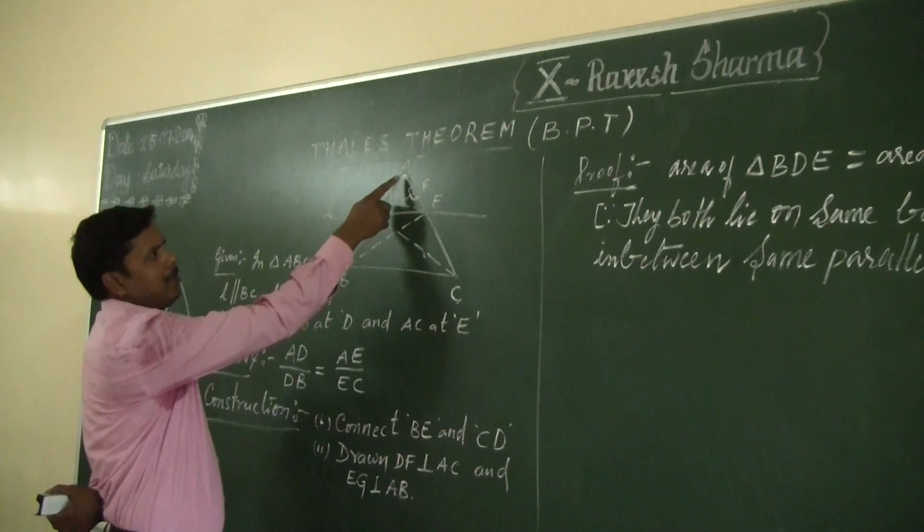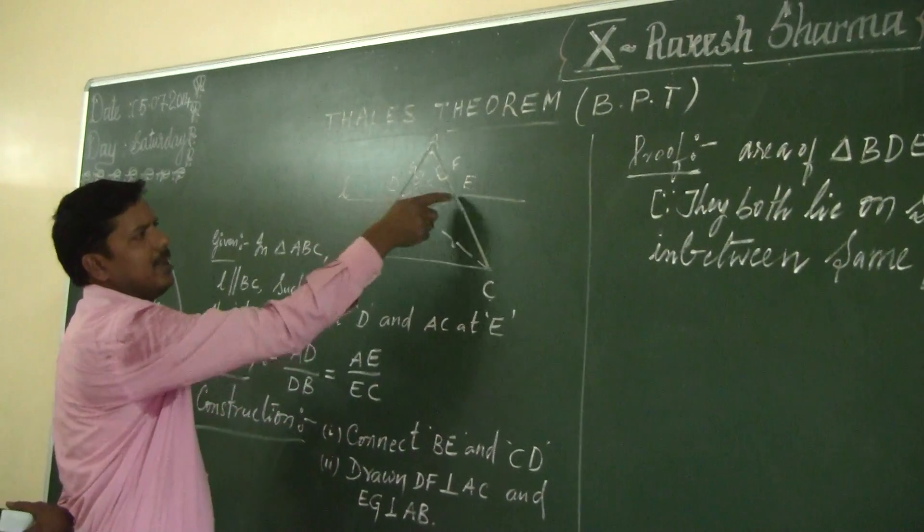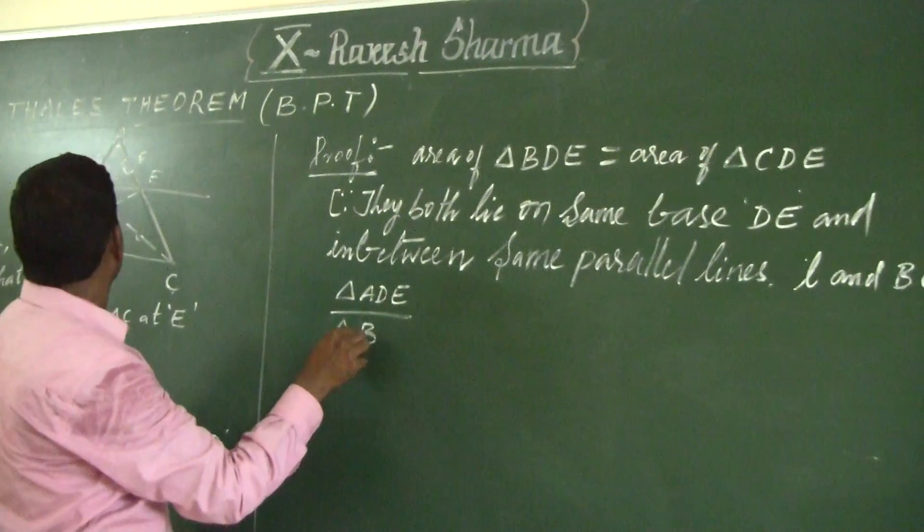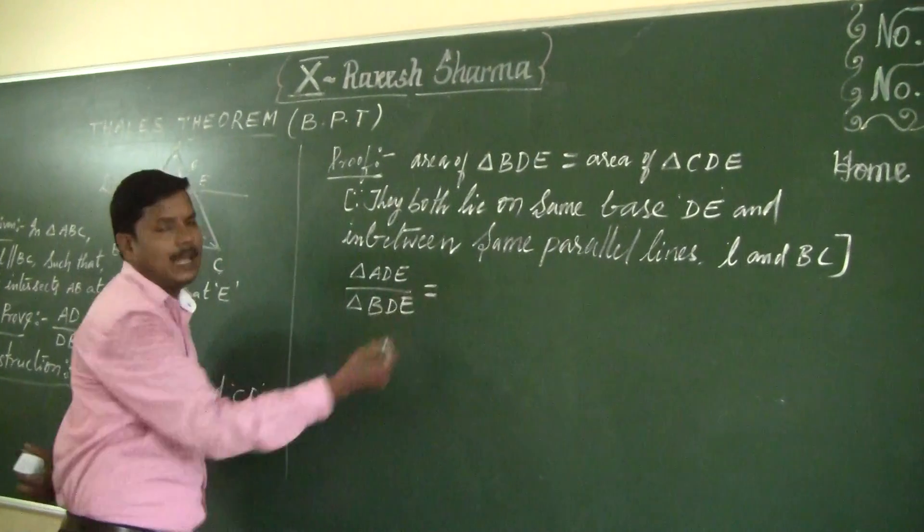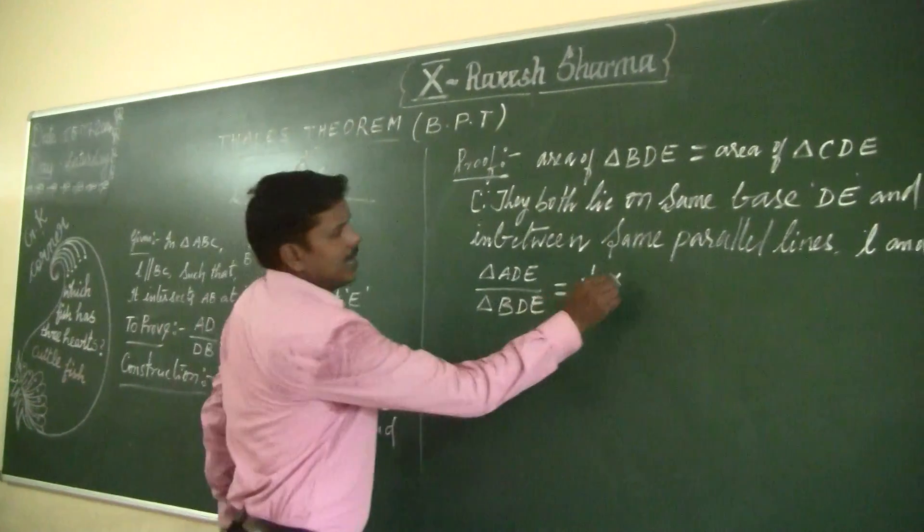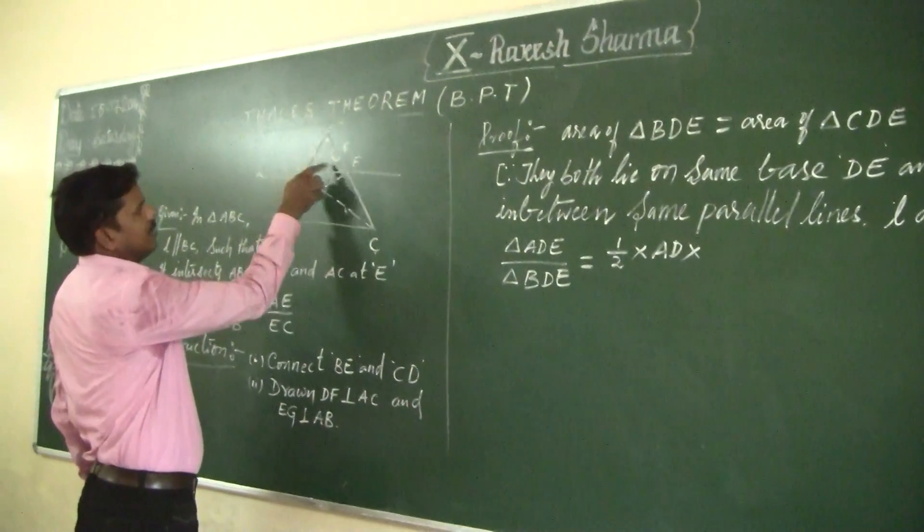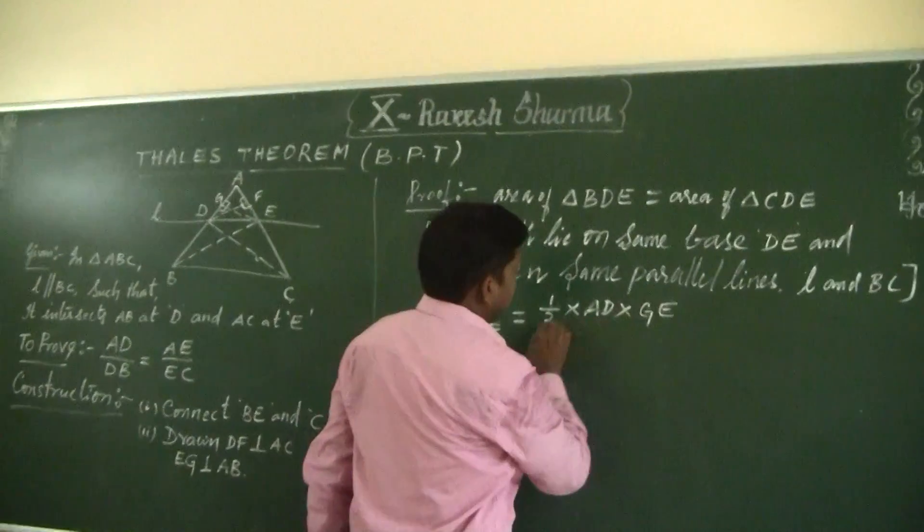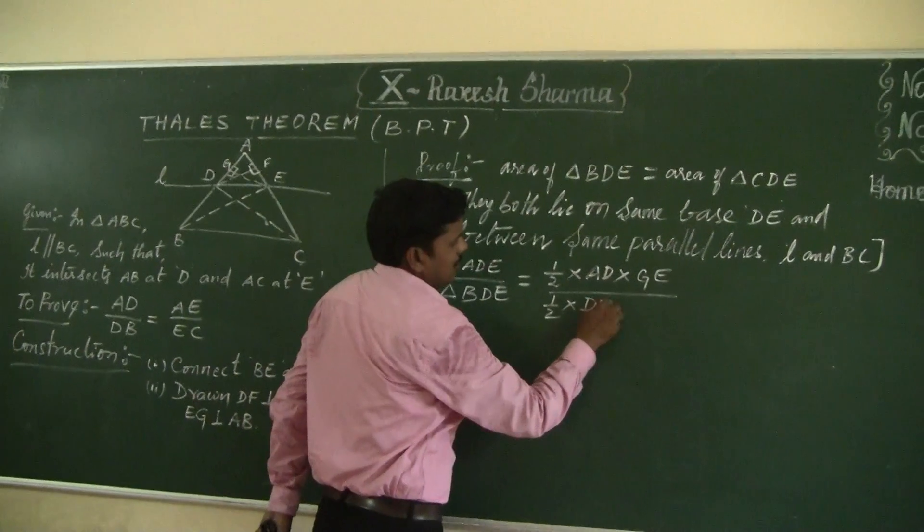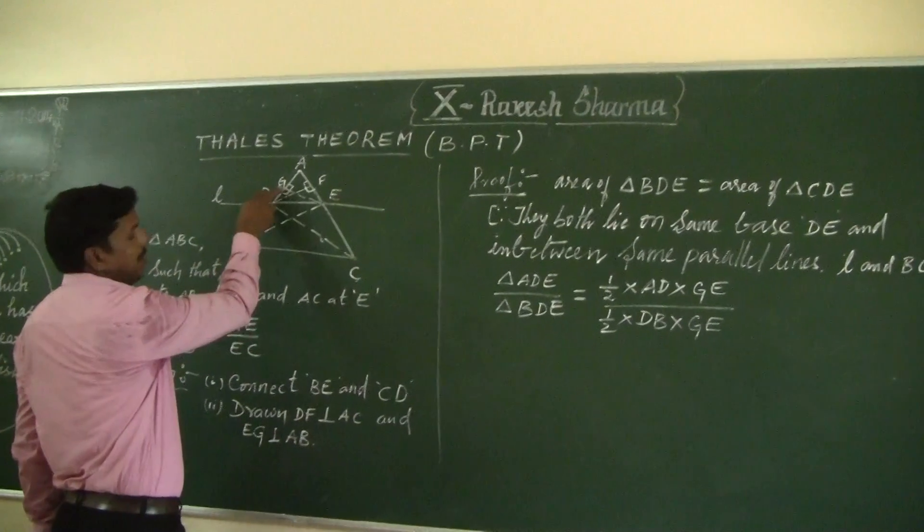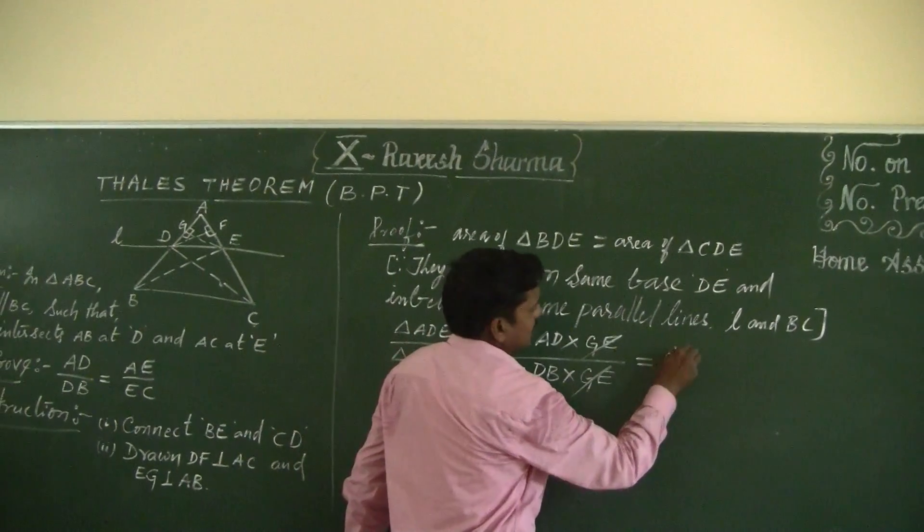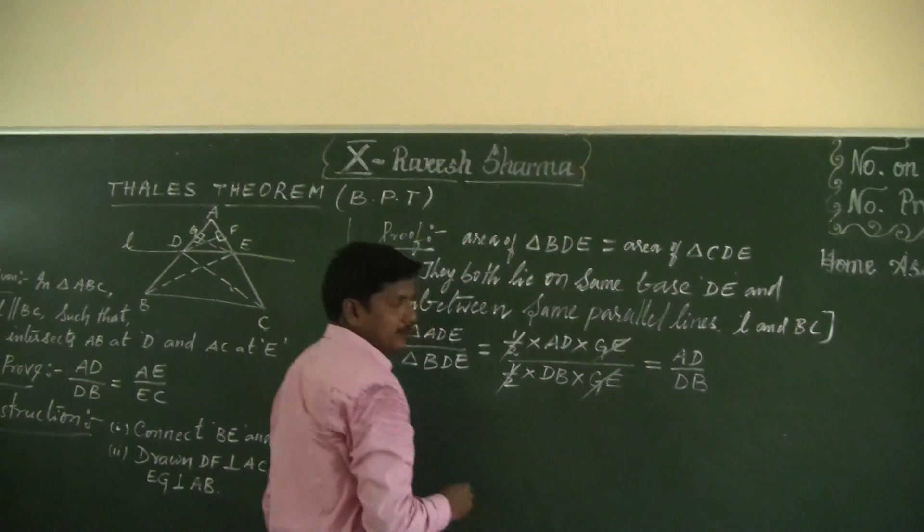Next, I want to compare the area of triangle ADE with respect to area of triangle BDE. Area of triangle ADE by triangle BDE equals half into base AD into height, by half into base DB into height. Now half gets cancelled, height gets cancelled. Finally what we got? AD by DB. This is equation 1.